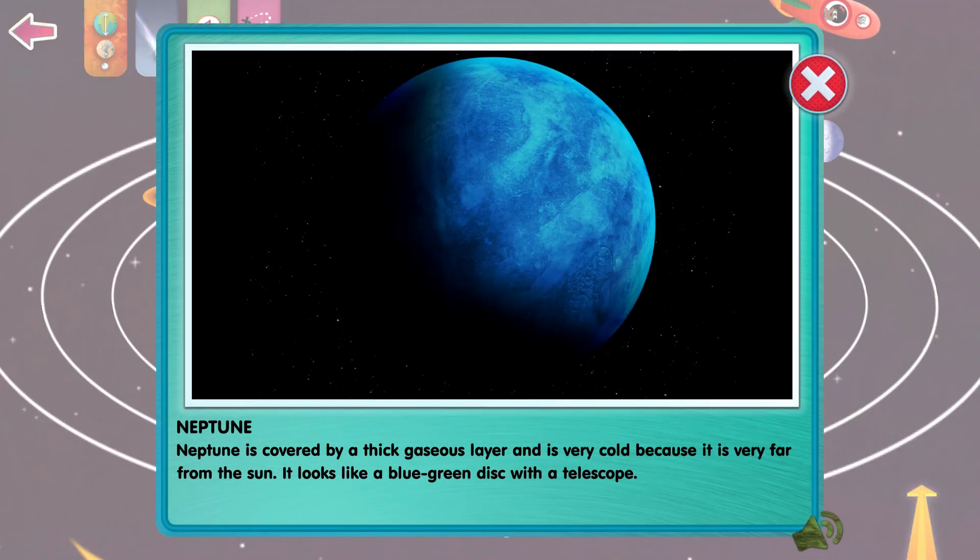Neptune is covered by a thick, gaseous layer and is very cold because it's very far from the Sun. It looks like a blue-green disk with a telescope.